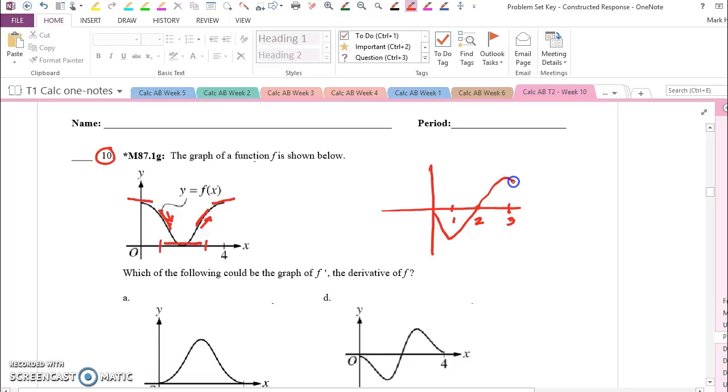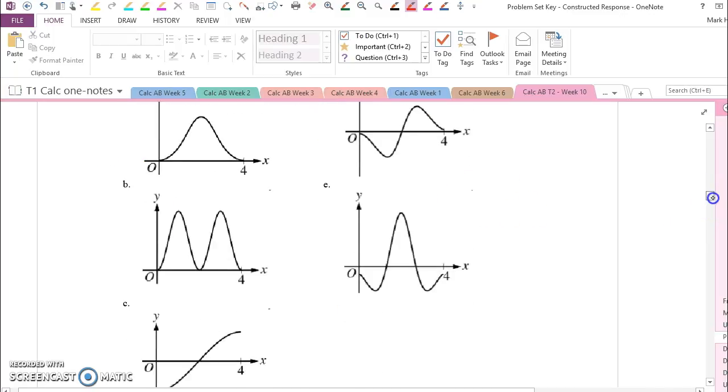a maximum at 3, and almost to 0 at 4. And now as we look, that looks just like choice D.